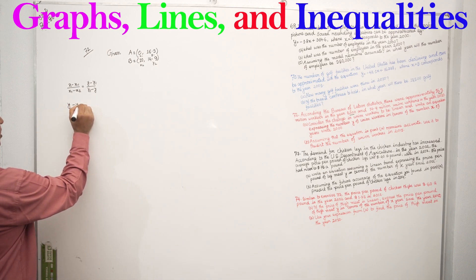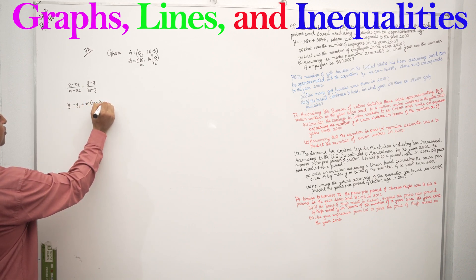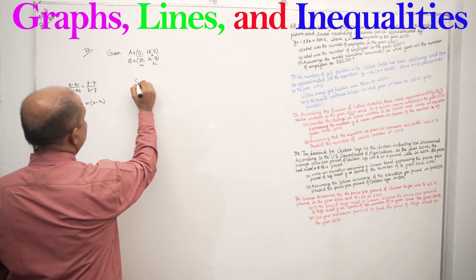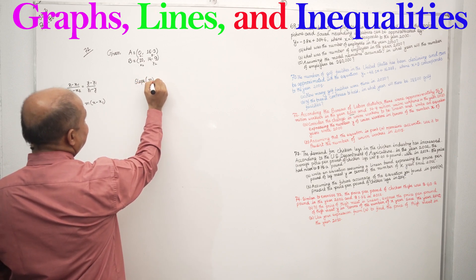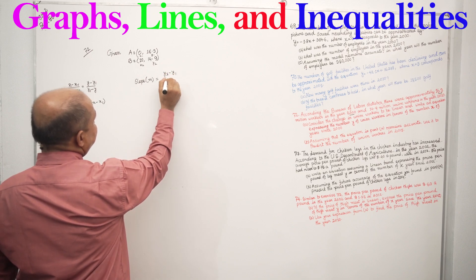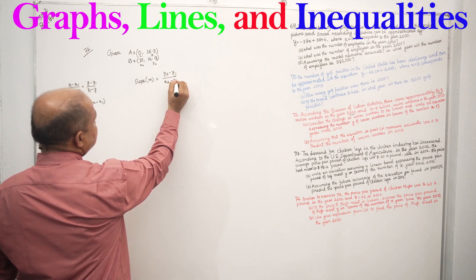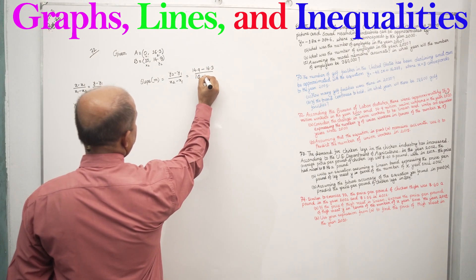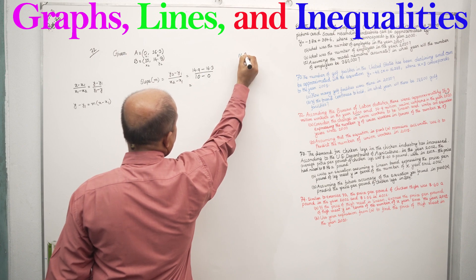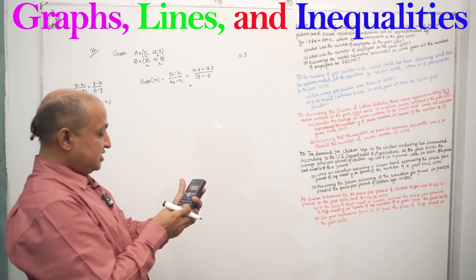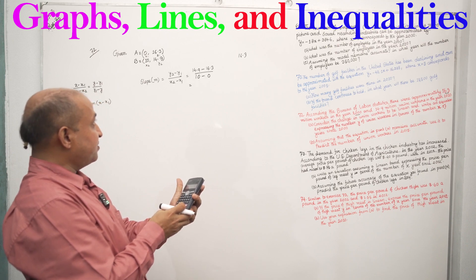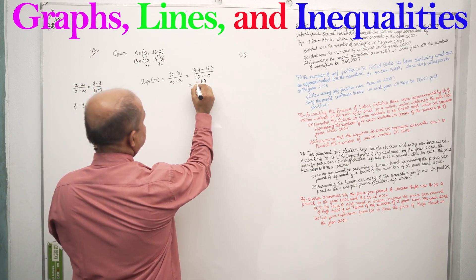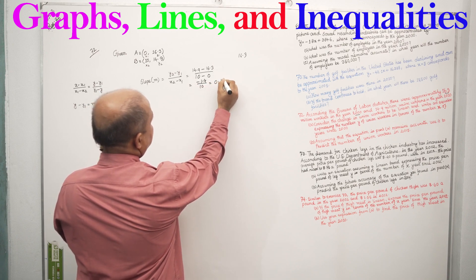Using point-slope form: Y minus Y1 equals M times x minus x1, where M equals y2 minus y1 divided by x2 minus x1. So M equals 14.9 minus 16.3 divided by 10 minus 0. This is minus 1.4 divided by 10, which equals minus 0.14.